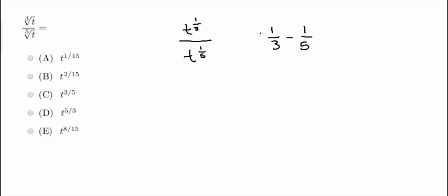and getting a common denominator of 15, I'm going to multiply this side by 5 over 5, and this by 3 over 3.